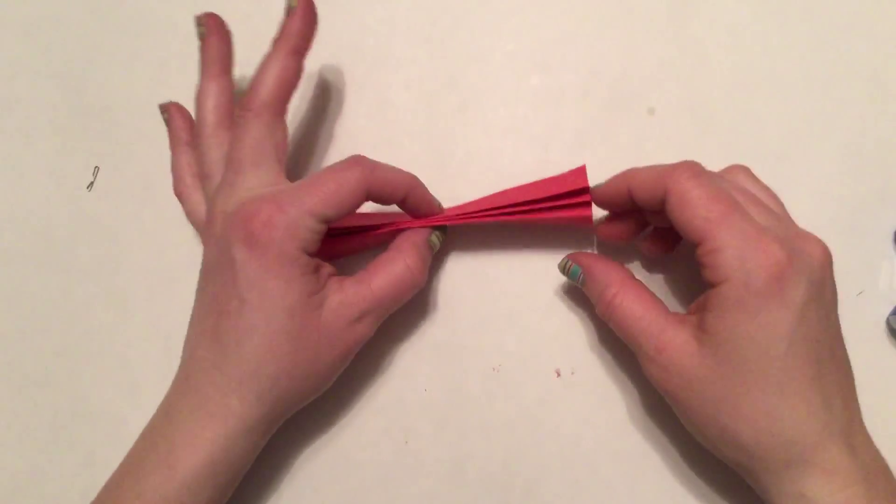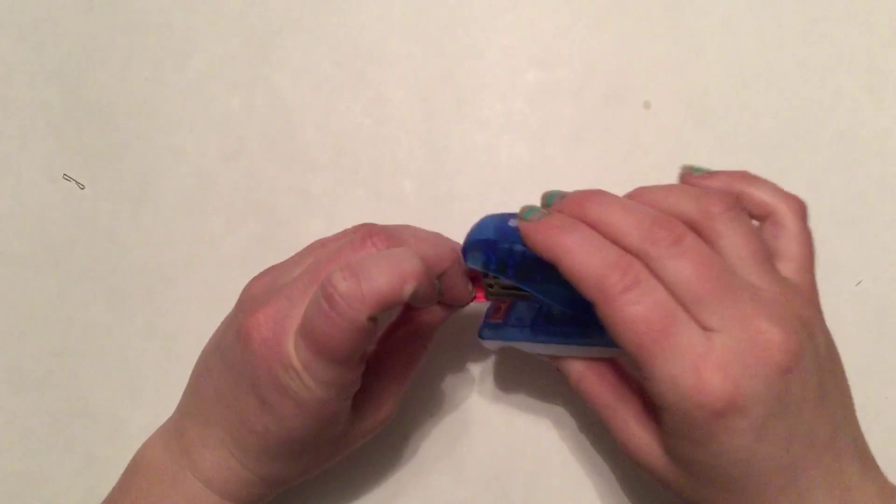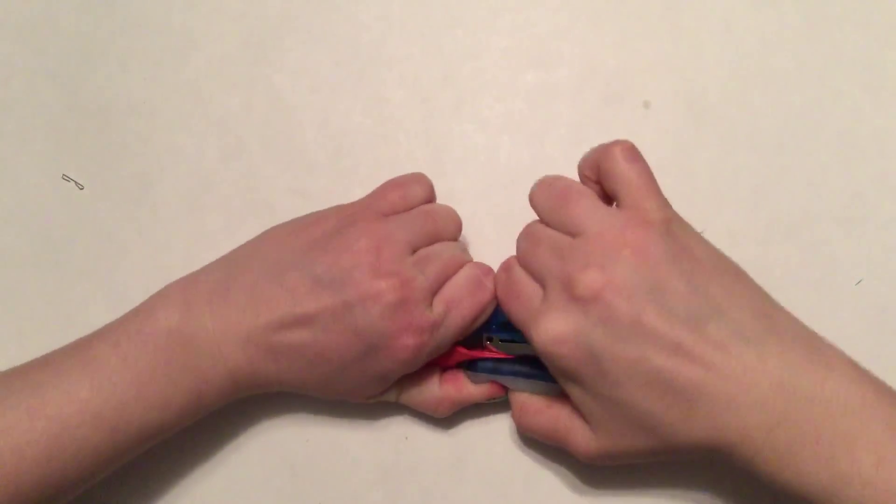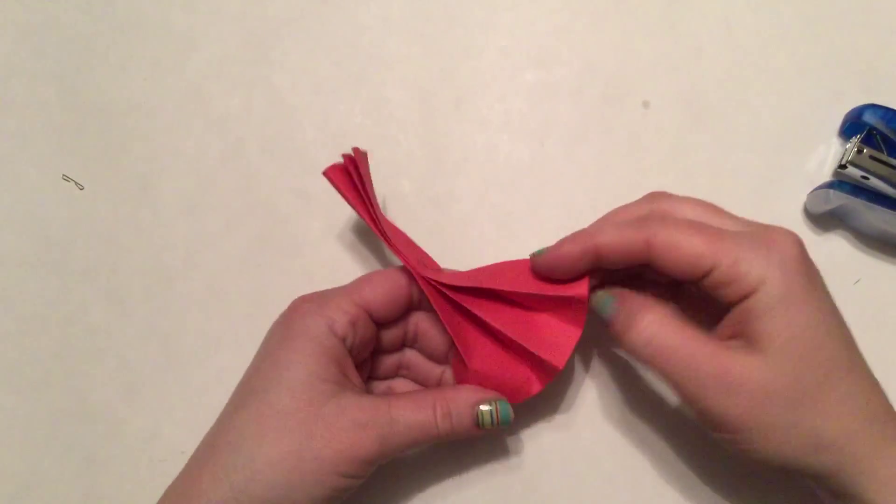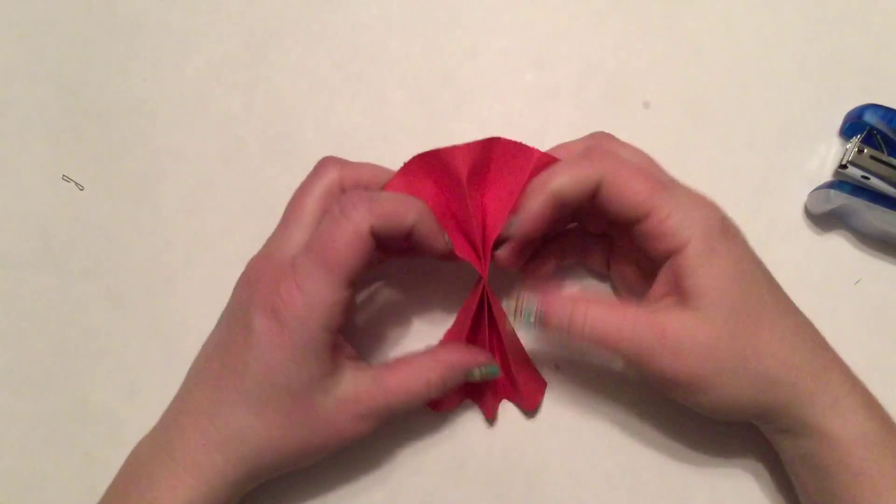Now in the middle, to make it a butterfly, I can take my stapler and put a nice staple right in the middle. Then I can spread out the edges to make my butterfly.